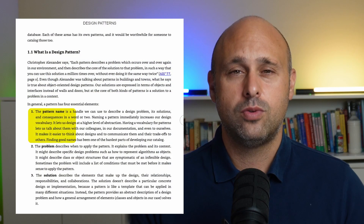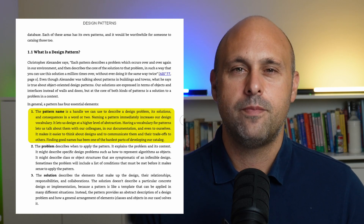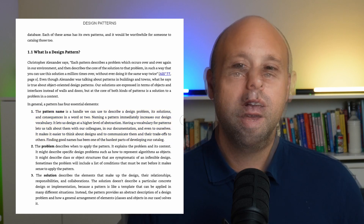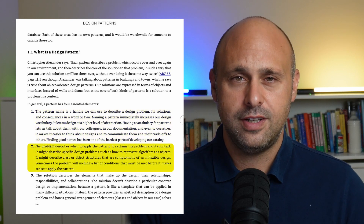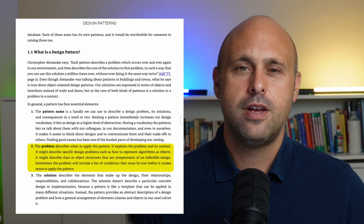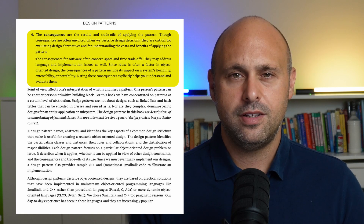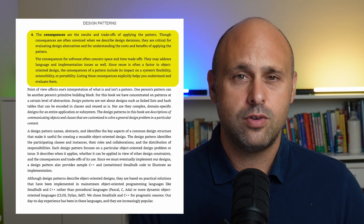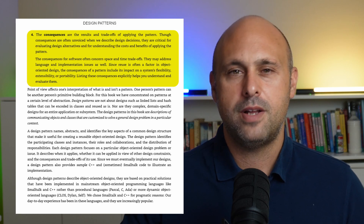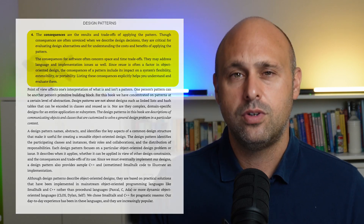The name is very important because whenever you're collaborating with your team, rather than explaining your solution in detail, you can simply name the pattern, like the observer pattern or the memento pattern. The problem is important because it explains in which scenarios or problems you can apply the pattern. The solution is the explanation of the pattern itself. And finally, the consequences are the result of the pattern and also the trade-offs that you have to take into consideration — the pattern has some strong points and advantages, but also some disadvantages that you need to be aware of.